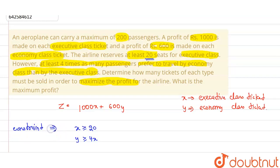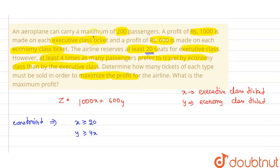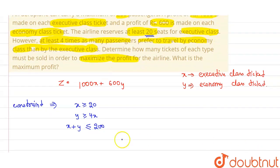The third constraint is that the plane can have a maximum of 200 passengers, so x plus y must be less than or equal to 200. The additional non-negativity constraint is that x and y are both greater than or equal to zero. These are all our constraints.